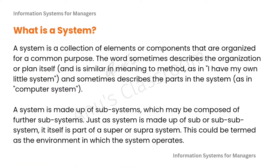A system is a collection of elements or components which are organized for a common purpose. The word is sometimes used to describe the organization or plan itself, similar in meaning to method, as in 'I have my own little system,' and sometimes describes the parts in the system, as in a computer system. A system is made up of many subsystems, which may be composed of further subsystems, and just as a system is made up of sub or sub-subsystems, it itself is a part of a super or supra system. This could be termed as the environment in which the system operates.